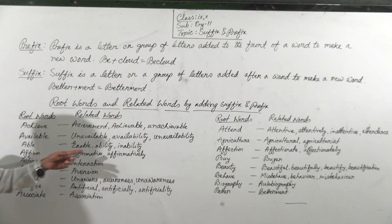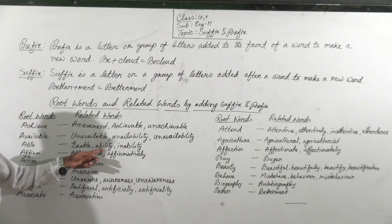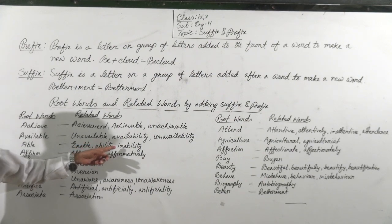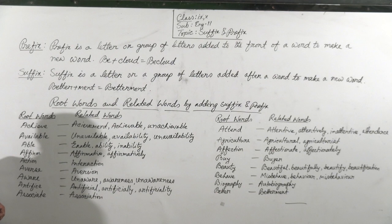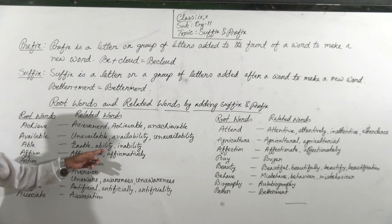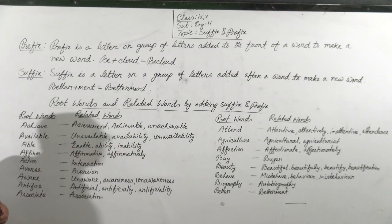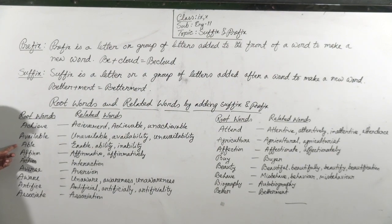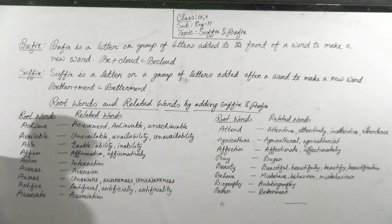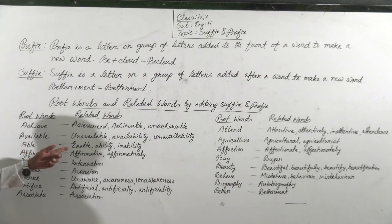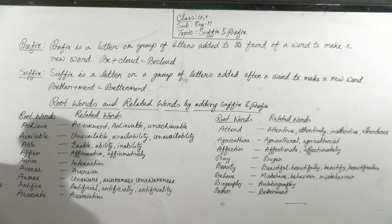Ability. 'Ability' is a noun. Here we have added a suffix. 'Inability' — 'inability' is the opposite of 'ability.' Here we have added both prefix and suffix — both have been added. So from this root word we have got new words: 'ability' and 'inability,' both are nouns.